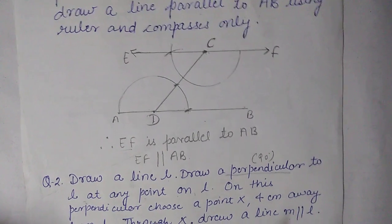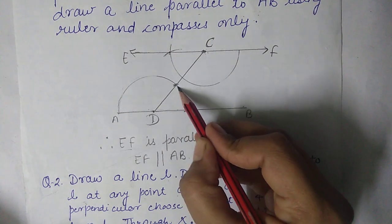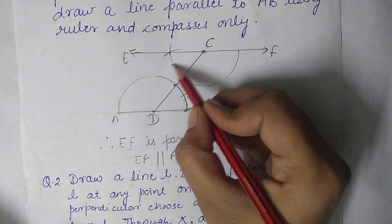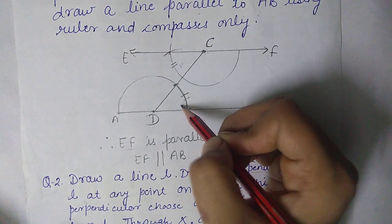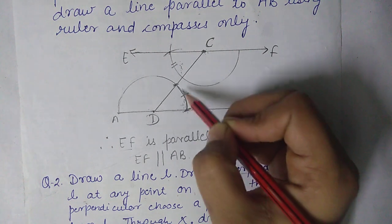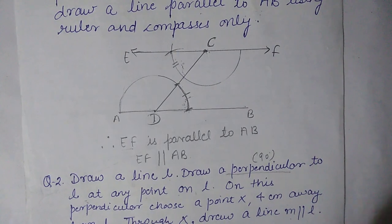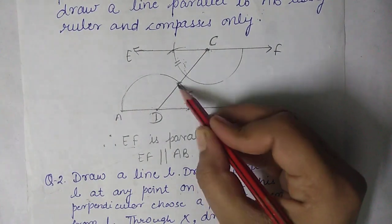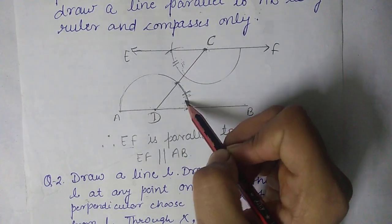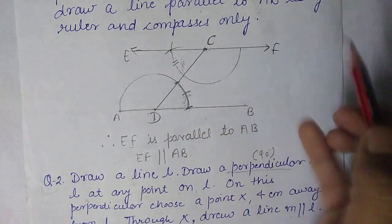One more thing I want to tell you about question number one: the main thing is I am equating two measurements — I am making these two equal because they are alternate interior angles. I made the alternate interior angles equal so that the lines can be parallel. That is the main reason why I made these two measurements equal.